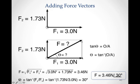Once we do that, we can see that these are our two vectors added together, and the resultant vector will go from the tail of our original vector to the tip of the vector we added tail to tip. This is our resultant force vector. Being a right triangle, we can use the Pythagorean theorem to solve for the length of the hypotenuse.